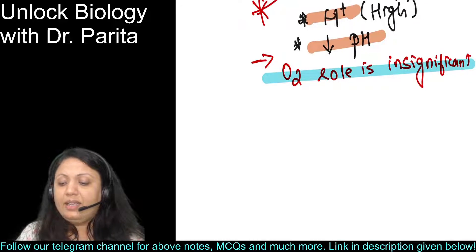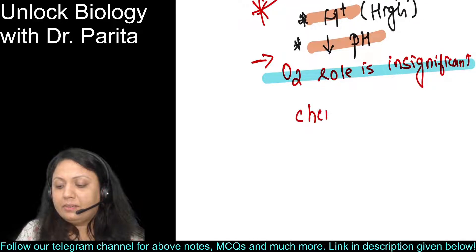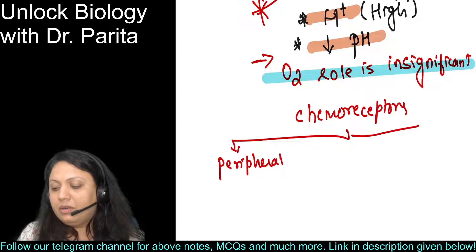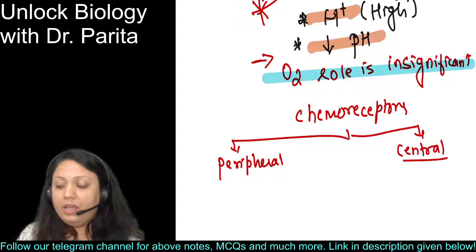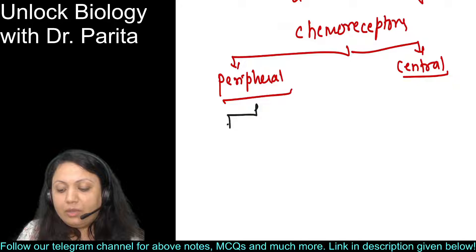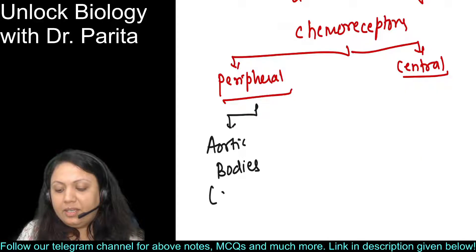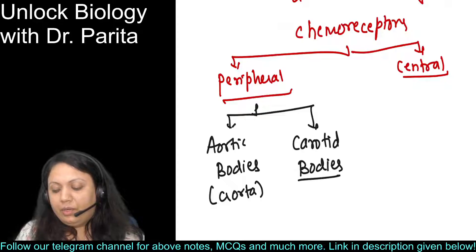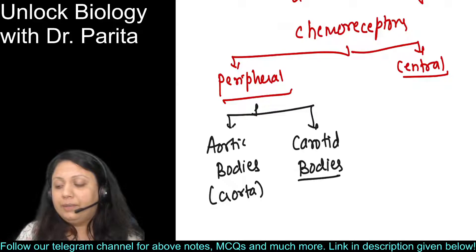Now when we come to chemoreceptors category, chemoreceptors are present as peripheral chemoreceptors and central chemoreceptors. Very important: peripheral chemoreceptors are present in two areas - aortic bodies, which are present in the aorta, and carotid bodies, which are present in the carotid artery that branches from your aorta.